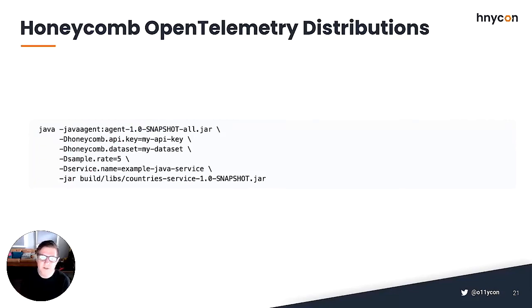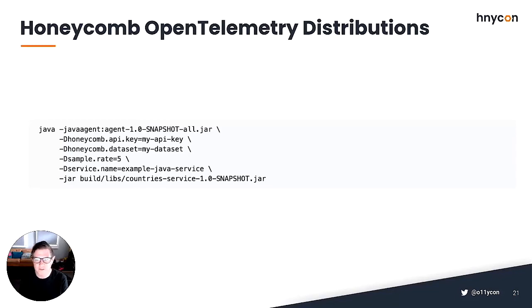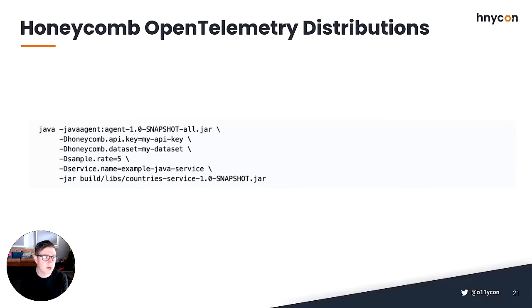The Java OpenTelemetry distribution also includes an auto-instrumentation agent. When you know you're using Honeycomb, you should just have to specify your Honeycomb API key, the dataset, and optionally a sample rate and service name — all sent as system properties when invoking the JVM with your Java application. Running this command with a jar file that bundles your Java application will start sending auto-instrumented trace data to Honeycomb. This is the straightforward way to start using Honeycomb with Java — just run it with a Java agent from our distribution.